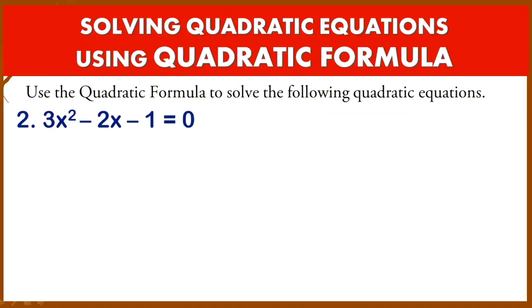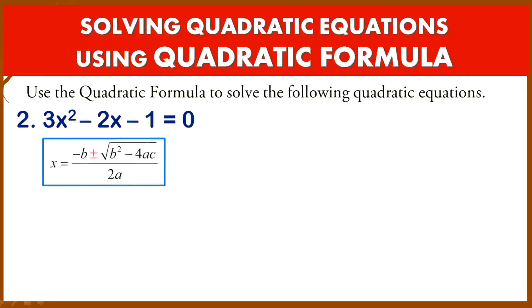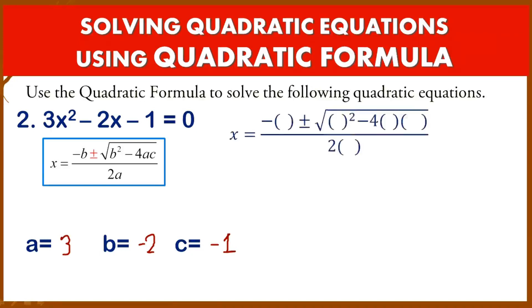Example number 2: 3x² − 2x − 1 = 0. Again, identify A, B, and C. A is the coefficient of x², which is 3. B is negative 2. C is negative 1. Substitute into the formula: B is negative 2; B squared is (−2)²; minus 4AC where A is 3 and C is negative 1. The denominator is 2A, which is 2 times 3.